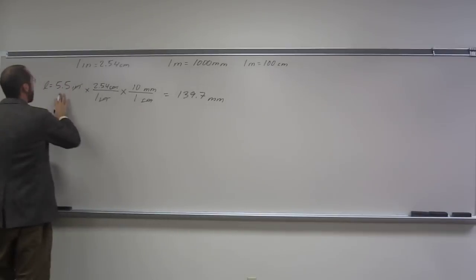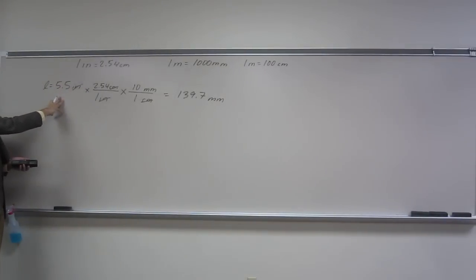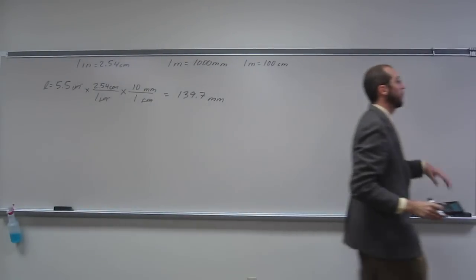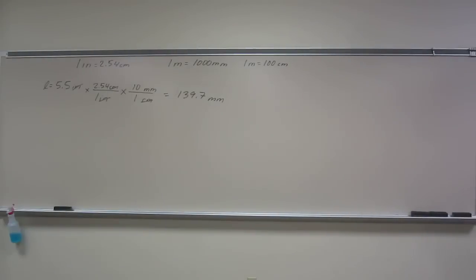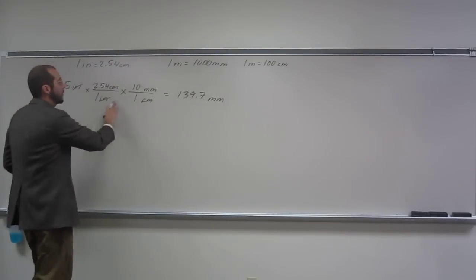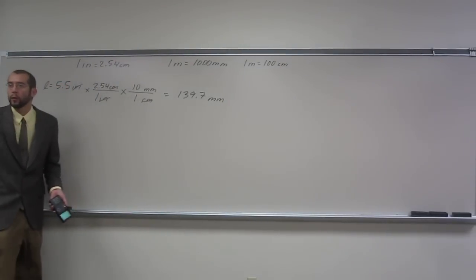But remember, we've got to have the right number of significant figures. So this has two significant figures. Why am I using only the 5.5? Because 5.5 is the only number that was given in the problem. If there was another number given in the problem, then you would use that number too. Conversion factors, you don't use their significant figures.